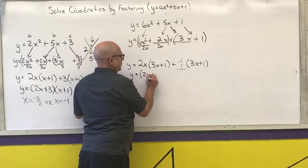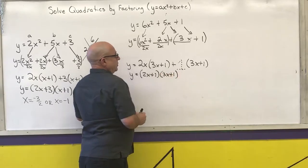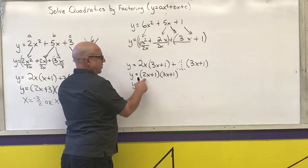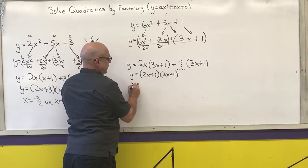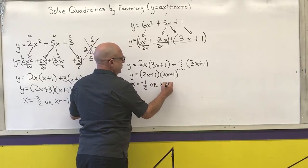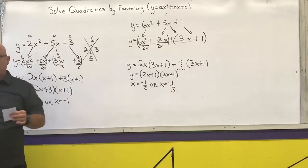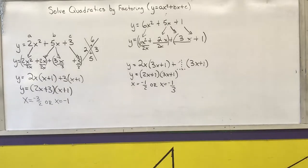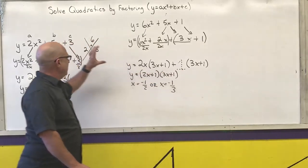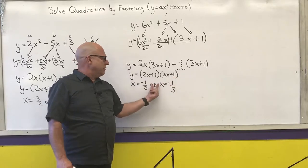What's inside the parentheses is the same, so I can combine what's outside. I have 2x plus 1 times 3x plus 1. Using the shortcut: change the sign and divide by the coefficient. So x equals negative 1 half, or x equals negative 1 third. Make sure you do the setup, and the reason I did this example was to show you that the invisible 1 is important.